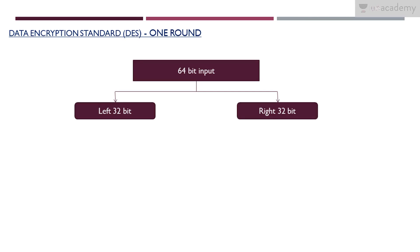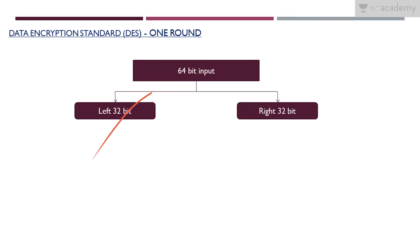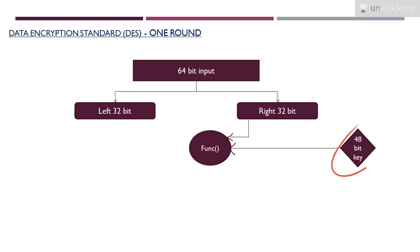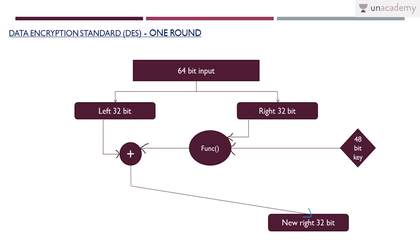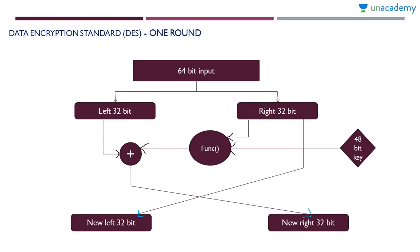We learnt what is happening in each round. Our 64 bit input will be split into left 32 bit and right 32 bit. Then there will be a function — we take the right 32 bit and the 48 bit key as input to this function. The output XORed with left 32 bit gives the new right 32 bit, and the right 32 bit without any change becomes the new left 32 bit.